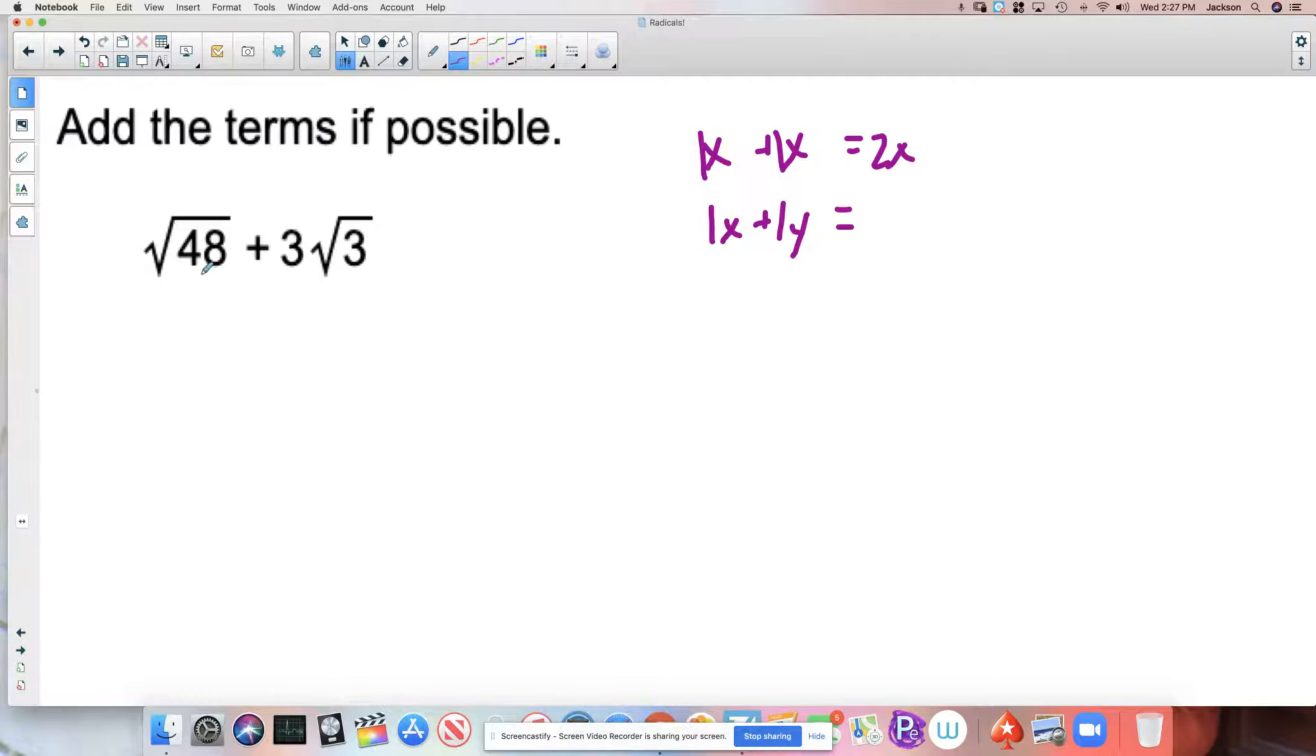Instead, what we want to try to look for is a way to simplify this or to pull out some numbers so that I can find maybe the square root of 3 somewhere in here. And that comes down to the product rule.